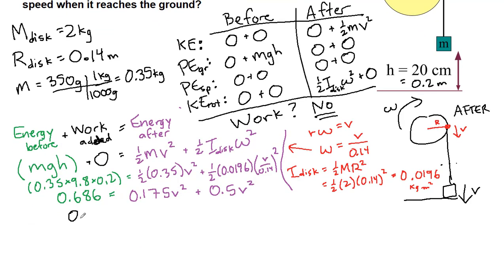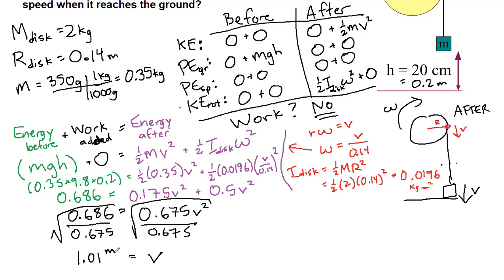So we have 0.686 is equal to 0.675 v squared. We divide both sides by 0.675, and then we take the square root of both sides. So we will get that v is equal to 1.008 or 1.01 meters per second, and that will be our final answer. That's the hanging mass as it reaches the ground.